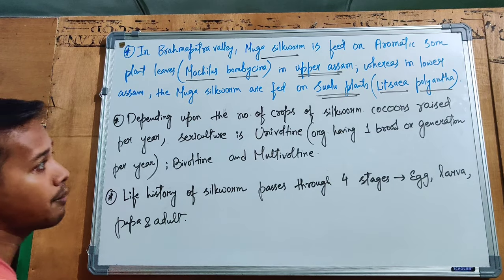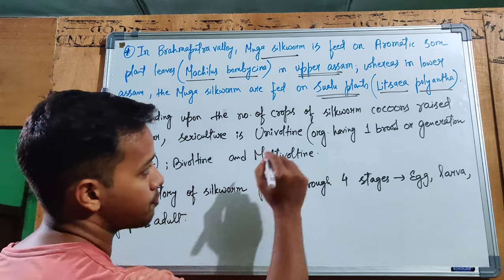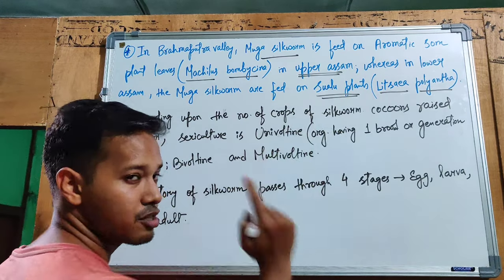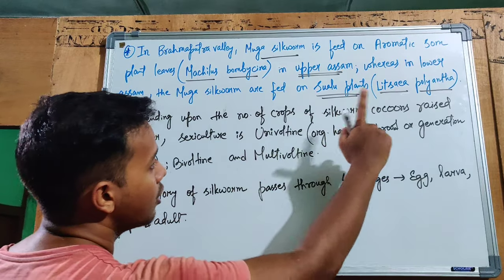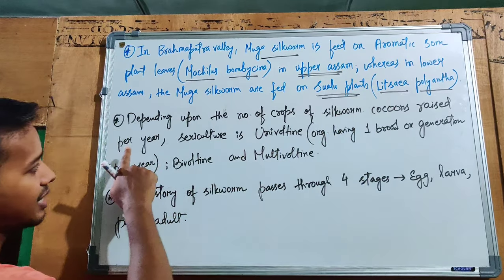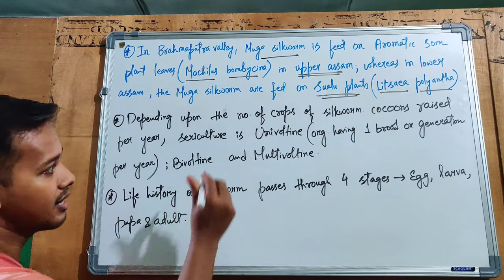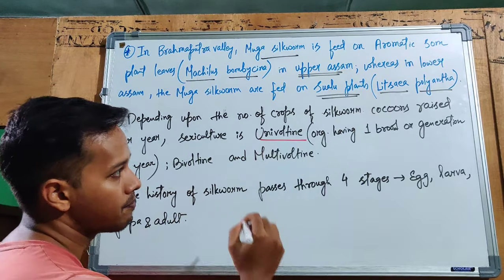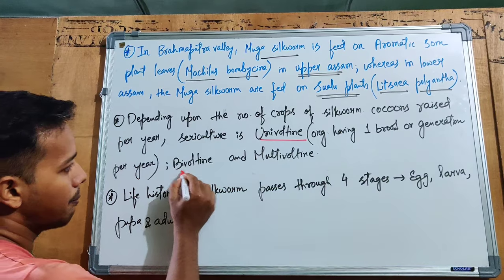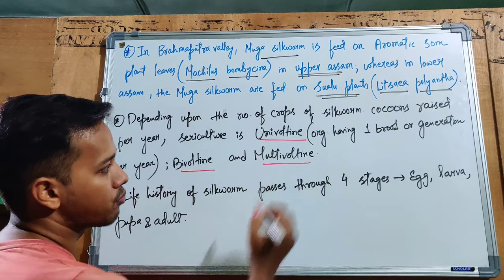Depending upon the number of cocoon crops raised per year, sericulture is classified as univoltine, bivoltine, or multivoltine. This is an important classification that frequently appears in exam questions.